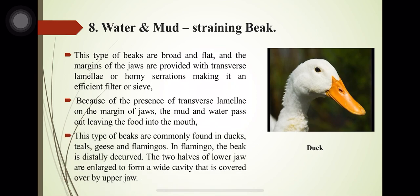This type of beak is commonly found in ducks, teals, geese and flamingos. In flamingos, the beak is distally decurved and the two halves of the lower jaw are fused to form a wide cavity that is covered over by the upper jaw.